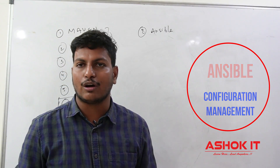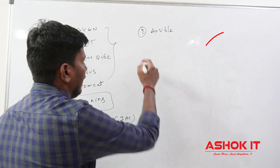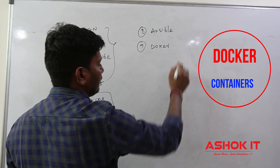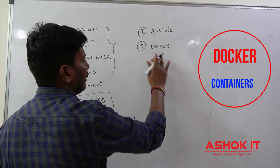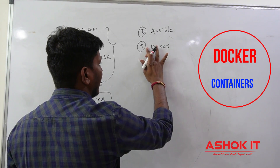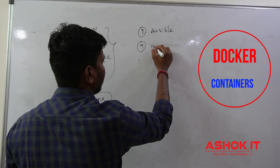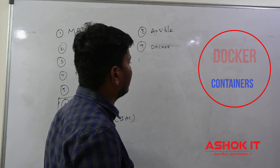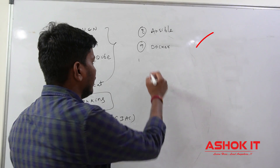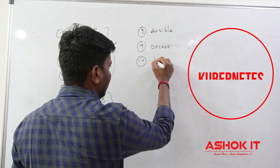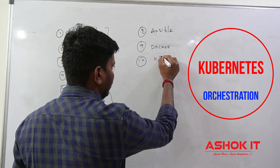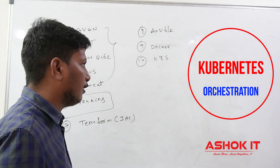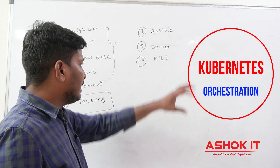The next one, the most important part for DevOps operations, is Docker. Docker we are going to use as a containerization platform in order to run our applications as containers. In order to manage the Docker containers we are going to use Kubernetes. Kubernetes is called as an orchestration platform.